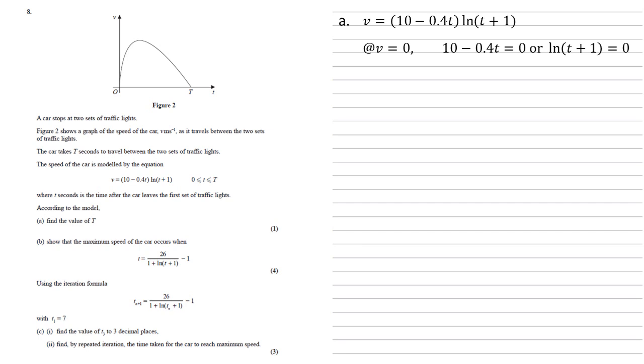So at v equals zero, we know from this equation that either the first part, the 10 minus 0.4t must equal zero, or the second part of it, the ln t plus 1 equals zero. Now we know there are two bits on our graph where v is equal to zero. There's the origin, zero, zero, and there's a bit where it goes through t.